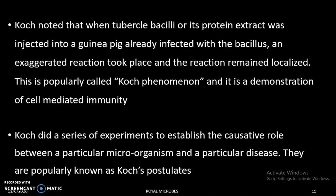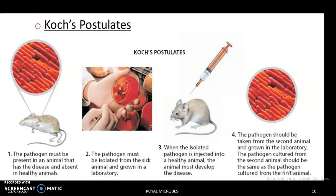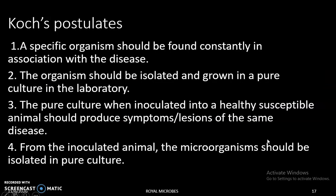Koch did several experiments to establish the relationship between a particular microorganism and a particular disease, and he introduced some postulates popularly known as Koch's postulates. In Koch's postulates: the pathogen must be present in an animal that has the disease; the pathogen can be isolated from the sick animal and grown in the laboratory; when the isolated pathogen is injected into a new healthy animal, that animal must develop the disease; then the pathogen from the second animal must be grown in the laboratory and must be the same as the pathogen from the first animal.